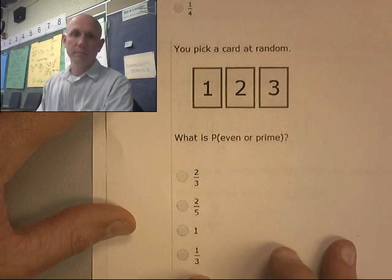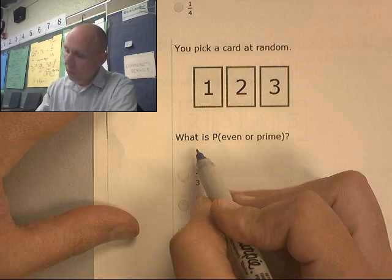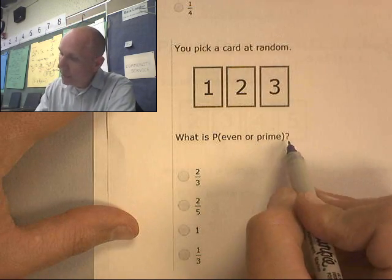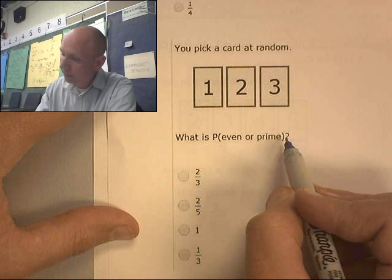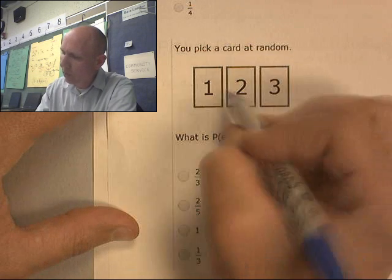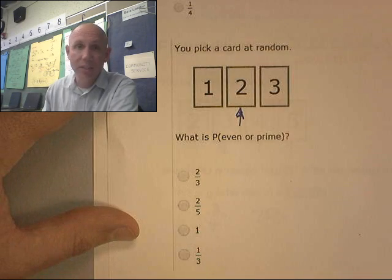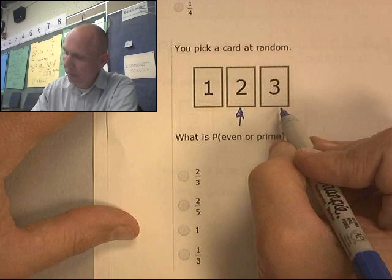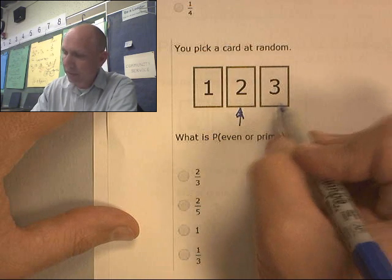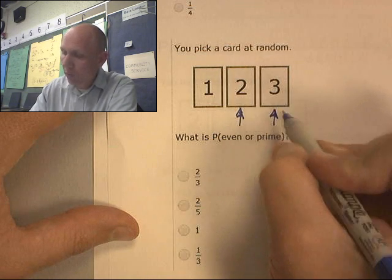You pick a card at random. What is the probability of even or prime? Even or prime. This one makes me happy because it's even. 3 is not even, but it is prime. That one makes me happy.